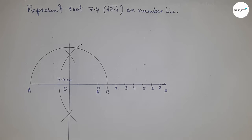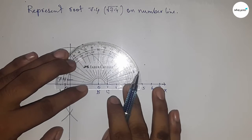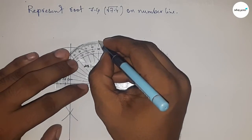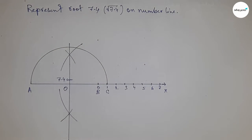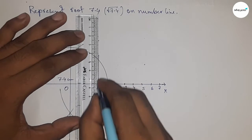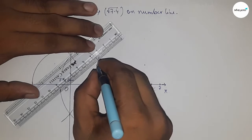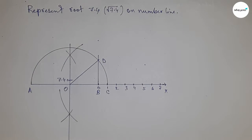Now construct a 90-degree angle at point B using a protractor. This is 90 degrees. Now joining this which meets the semicircle at point D. Next, joining O and D.